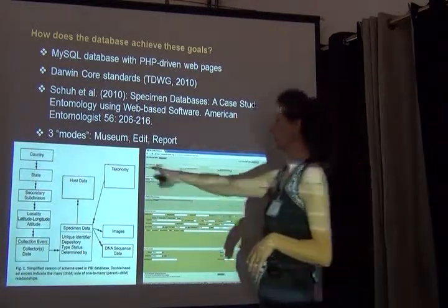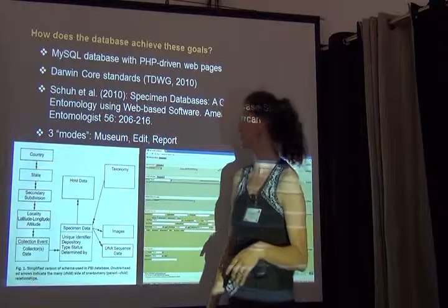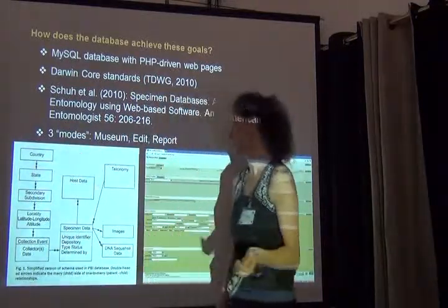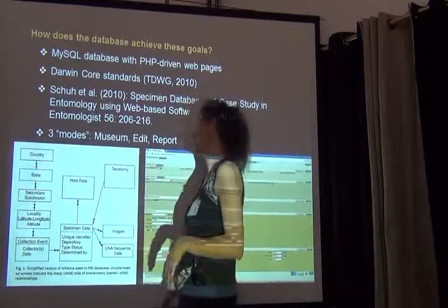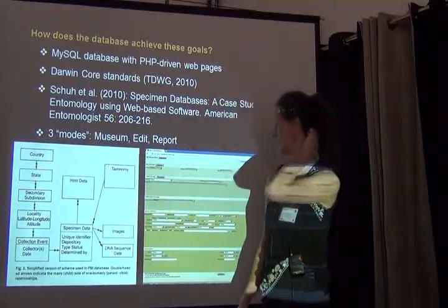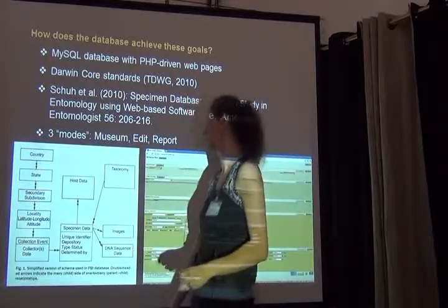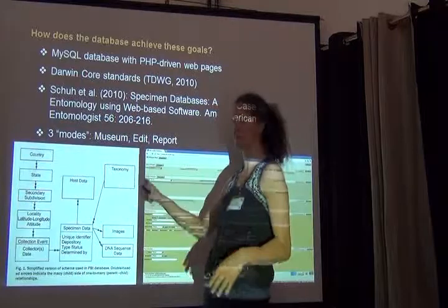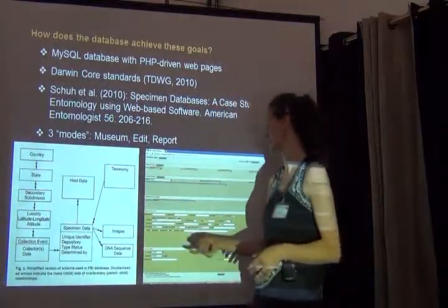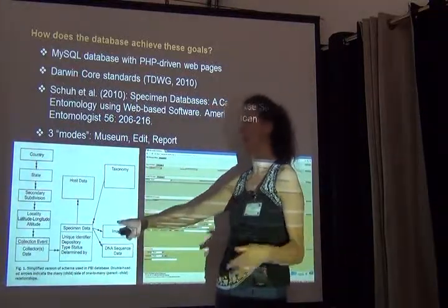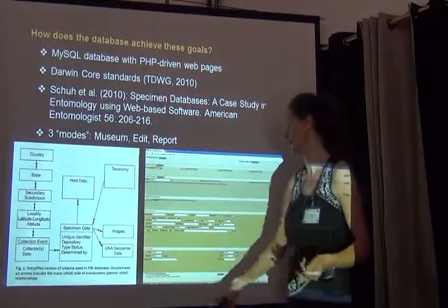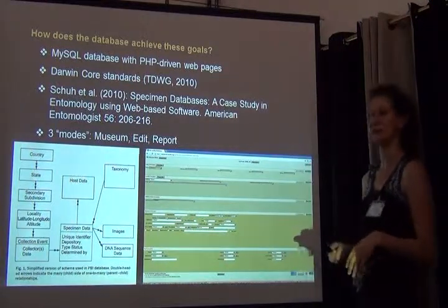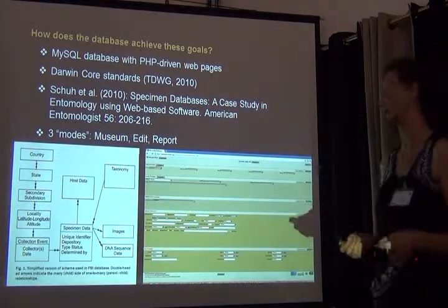What we're capturing here — this is a pretty simple scheme — we have all the locality collection event information. We have the specimen data that comes with a bunch of subcategories. We have the host data, which is very important and something we put a lot of emphasis on. We need to get the taxonomy in there, which means the authority files that Katja talked about. We want to attach images, and DNA sequence data is something we never really pursued to the full extent initially planned, but it can be done.